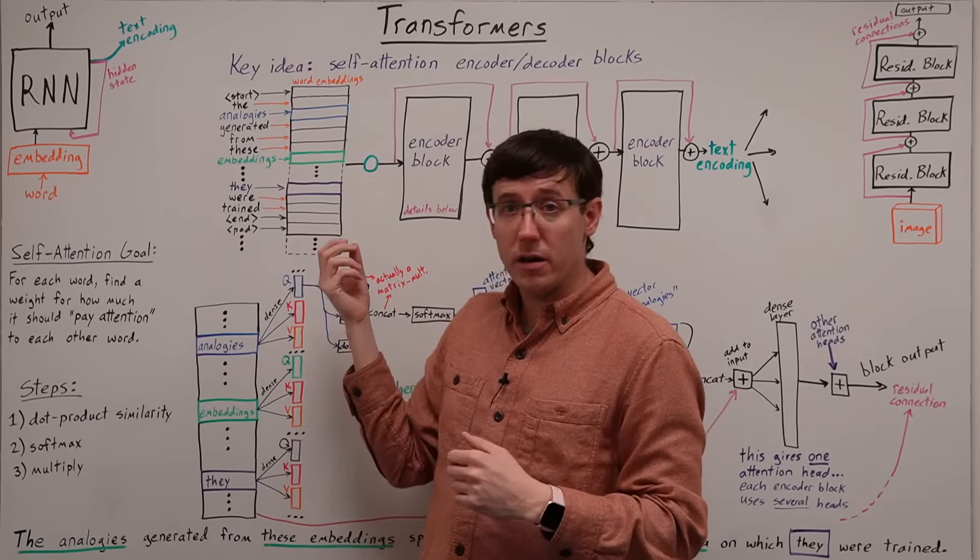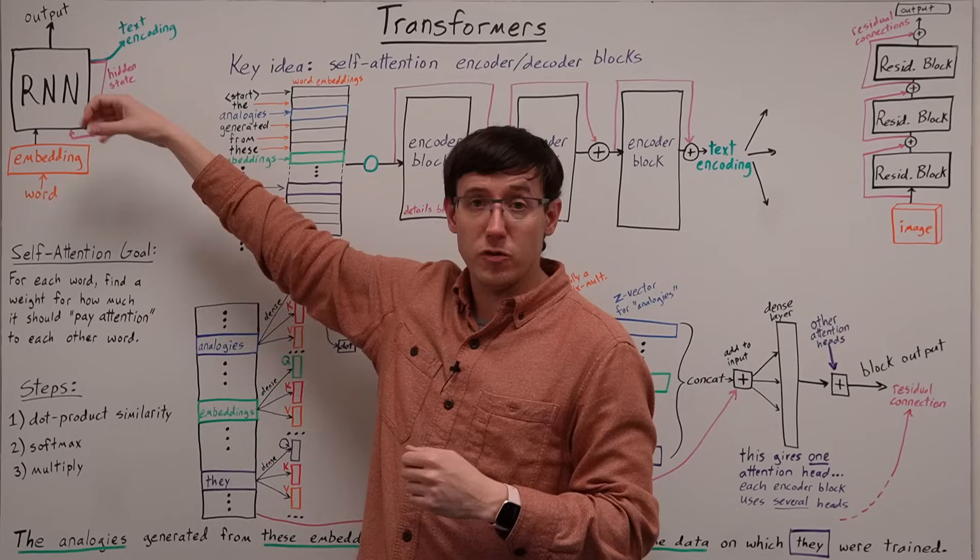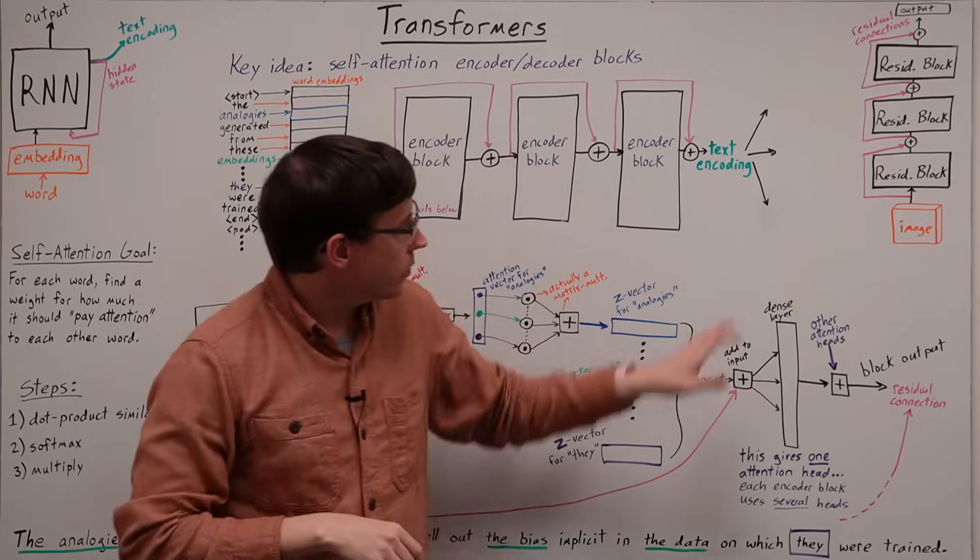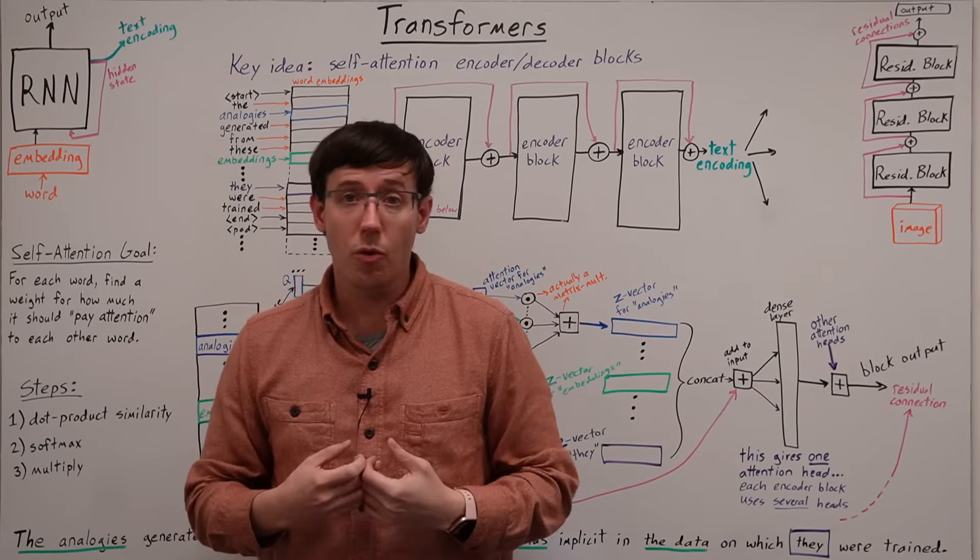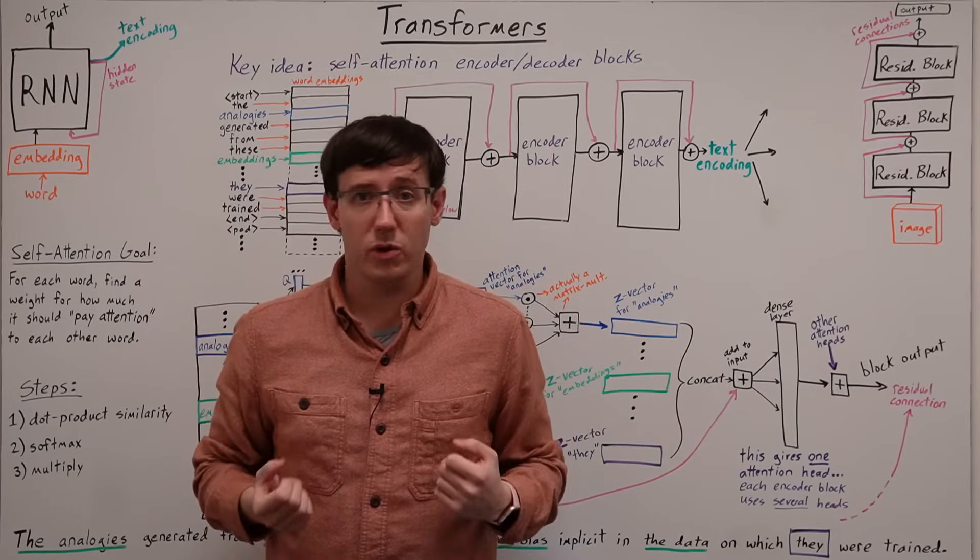And like recurrent networks, a transformer can be trained on unsupervised prediction of missing words to produce an encoding of a document that can be used for all sorts of natural language processing tasks.